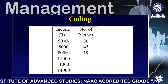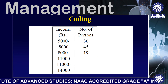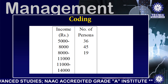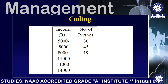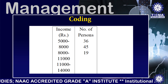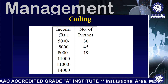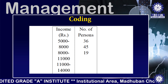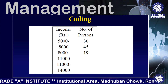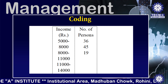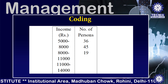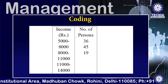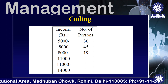In this table, you will find a matrix of income and number of persons. The first range is 5,000 to 8,000 and the number of persons is 36. The second range is 8,000 to 11,000 and the number of persons is 45. The third range is 11,000 to 14,000 and the number of persons is 19.